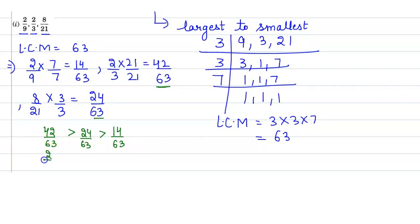So also you can write it as 42 upon 63, here we have 2 by 3. 24 upon 63 is 8 by 21. 14 upon 63 is 2 by 9.